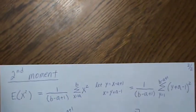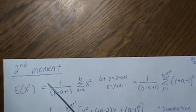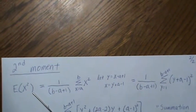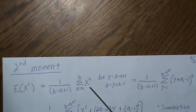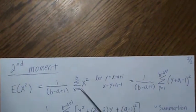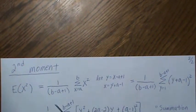Before we find the variance, I want to find the second moment of this distribution. So the expected value of X squared is the sum from A to B of our value.